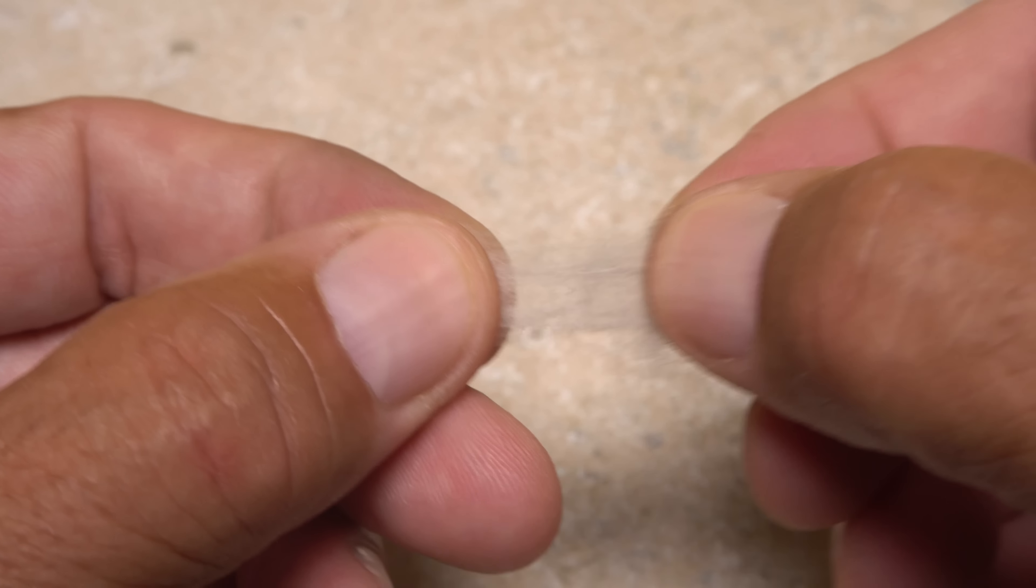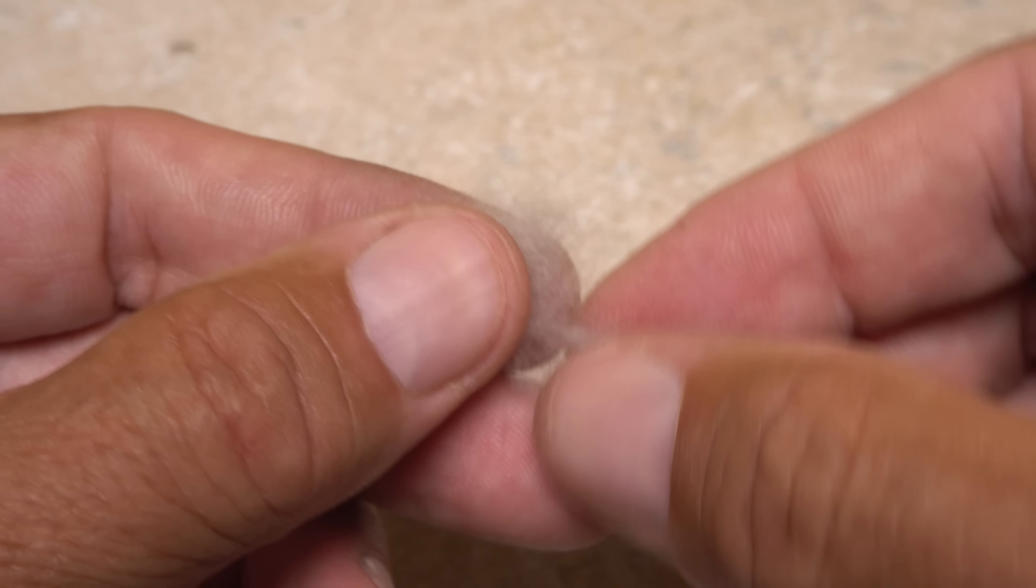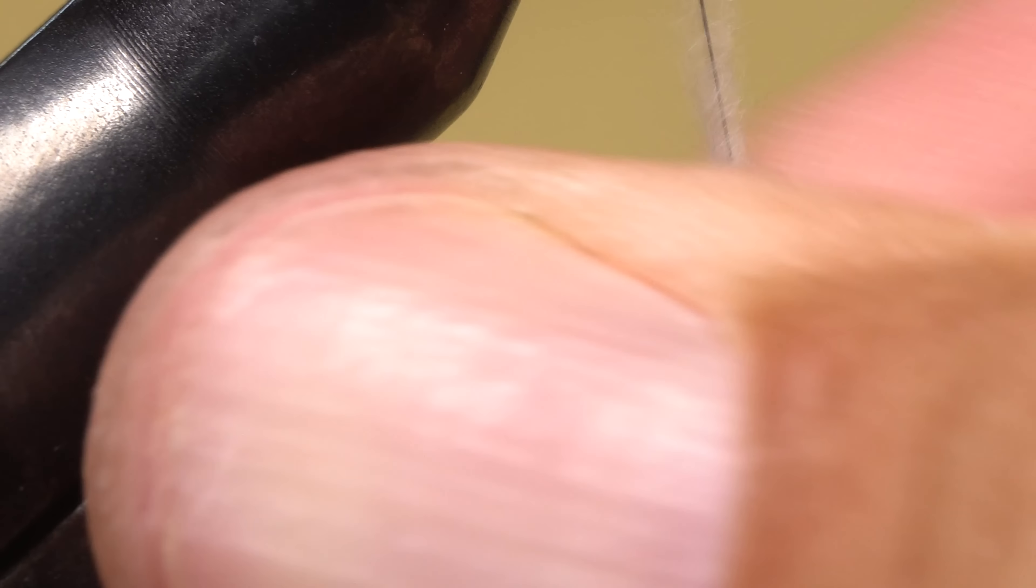For the body, I like beaver dubbing, here in a color called Adam's Gray. Pluck an ample clump free from the packet or dispenser, then pull the clump apart several times to help align the fibers.